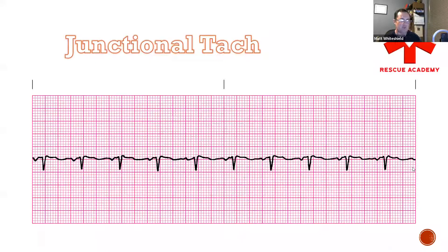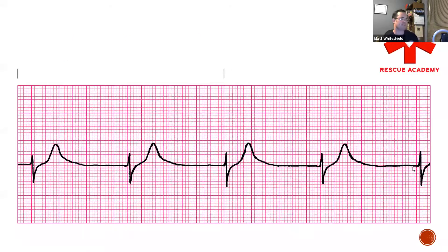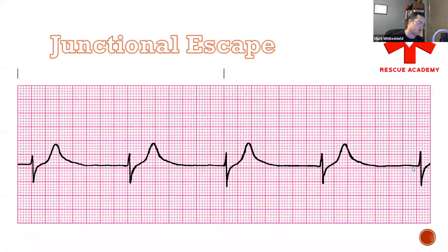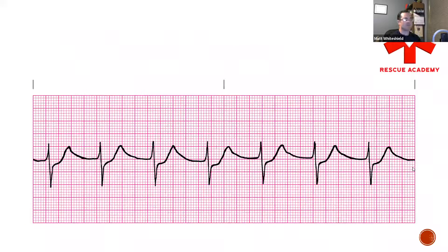Understand that the 6-second strip method isn't super precise — because it's not exact, this rate would have just been over 100 beats per minute. Next strip: rate of about 50, almost on the dot, no P-waves — junctional escape rhythm. Remember, it's still narrow QRS complex, no P-waves, and it is less than 60 but greater than 40. If it's less than 40, we would consider it junctional brady.